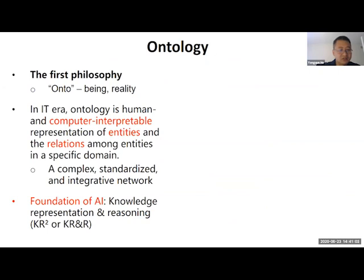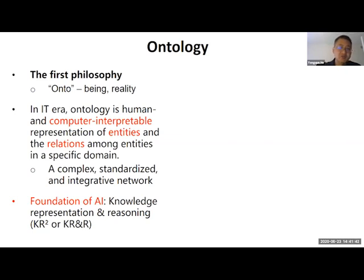Here we come to ontology. Ontology belongs to an AI scope—in AI there is a domain called KR&R, or Knowledge Representation and Reasoning. Ontology is a major part and plays an increasingly important role. Ontology has been around for more than 2,000 years. Ancient Greek philosophers thought of ontology as the study of being and reality. In the IT area, we now add computer interpretability as a major criterion.